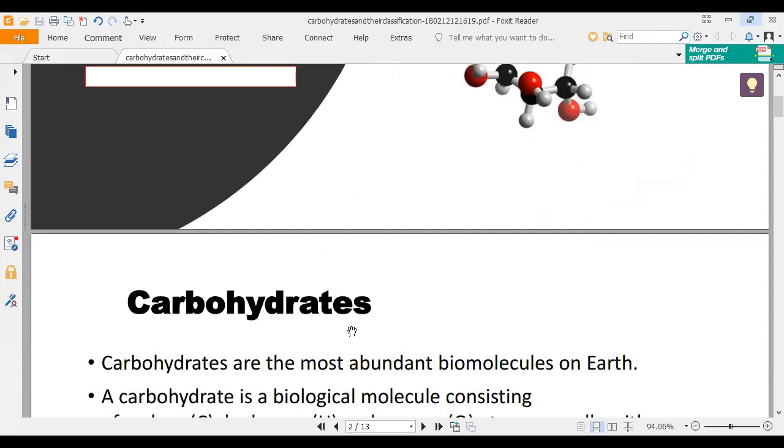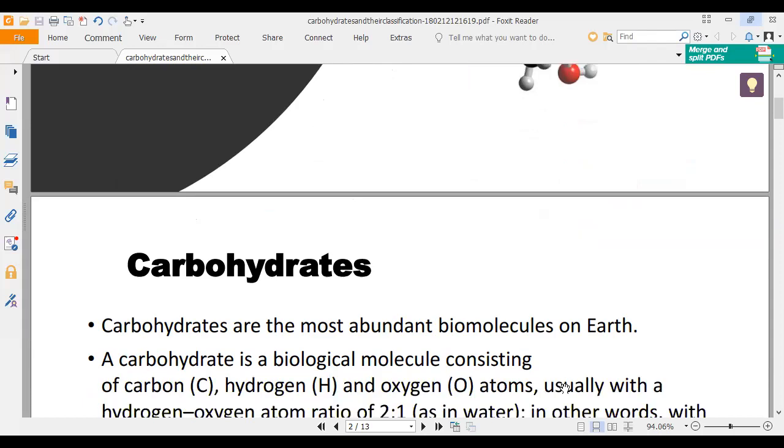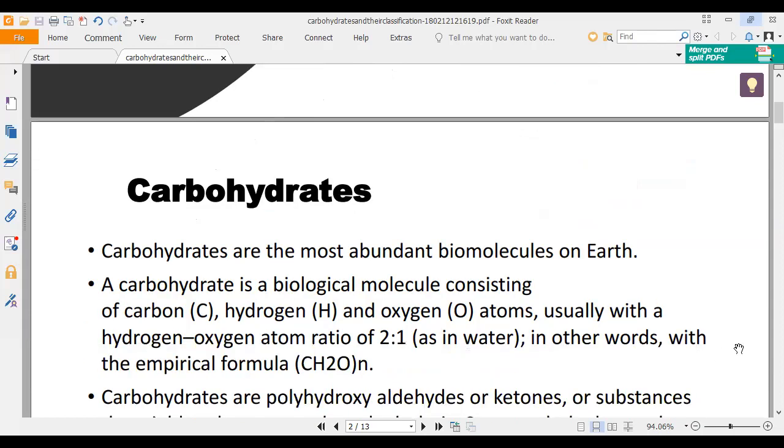Dear friends, I am discussing biochemistry, first unit on carbohydrates. Carbohydrates are the most abundant biomolecules on Earth. A carbohydrate is a biological molecule consisting of carbon, hydrogen and oxygen atoms, usually with a hydrogen-oxygen atom ratio of 2 to 1 as in water. In other words, the empirical formula CH2O is a carbohydrate formula.